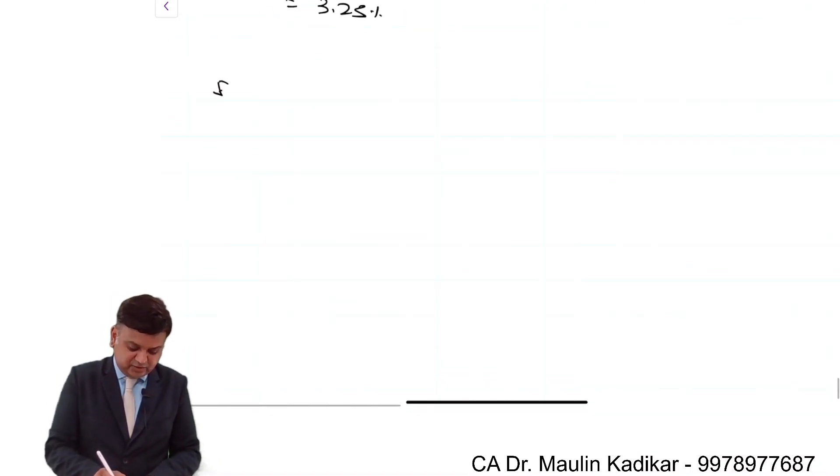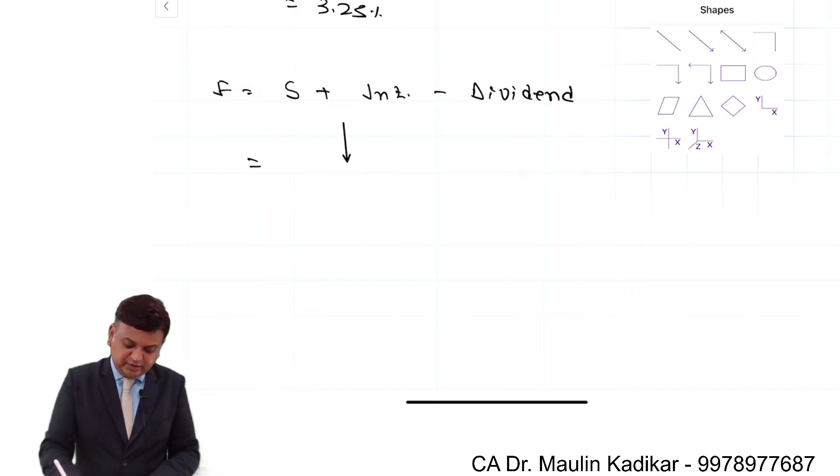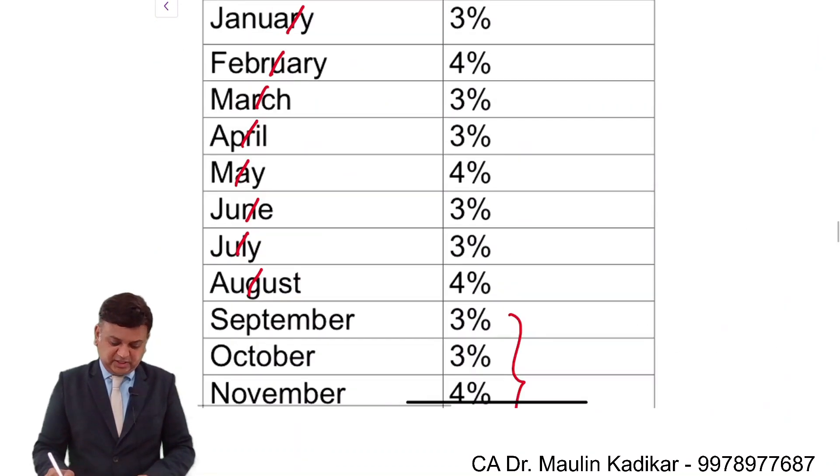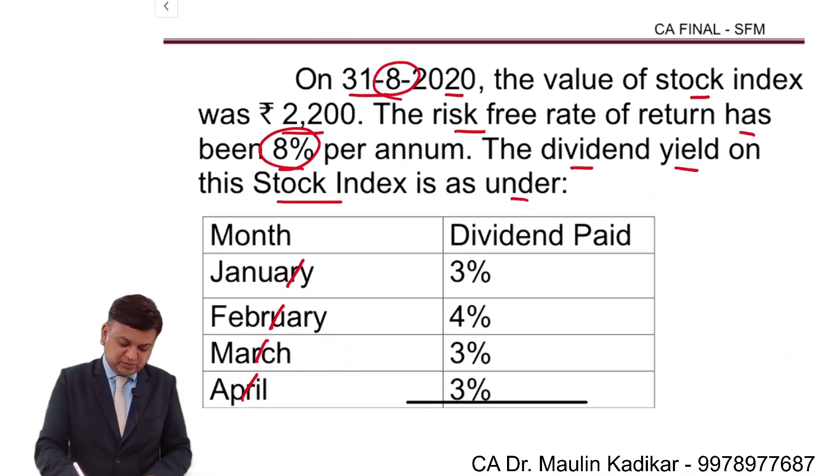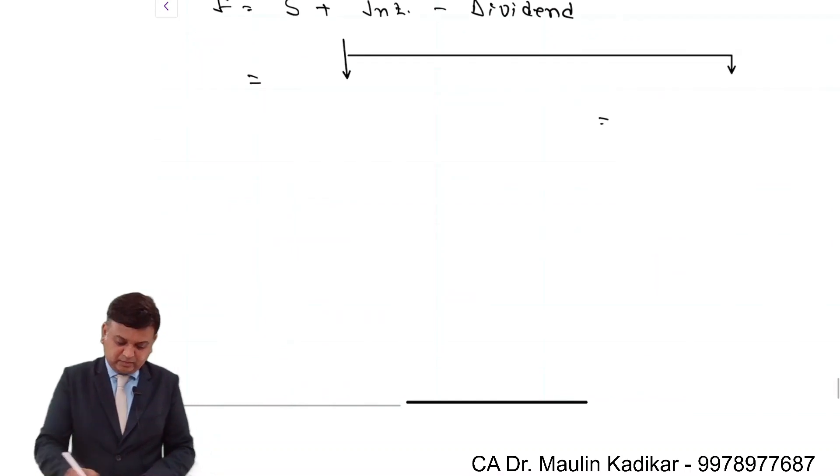Now F equals spot plus interest minus dividend. This is the way we usually make the computation. What do we do usually? We do something like this. The spot value is given to us at the beginning of the question as 2,200. This is the spot value.